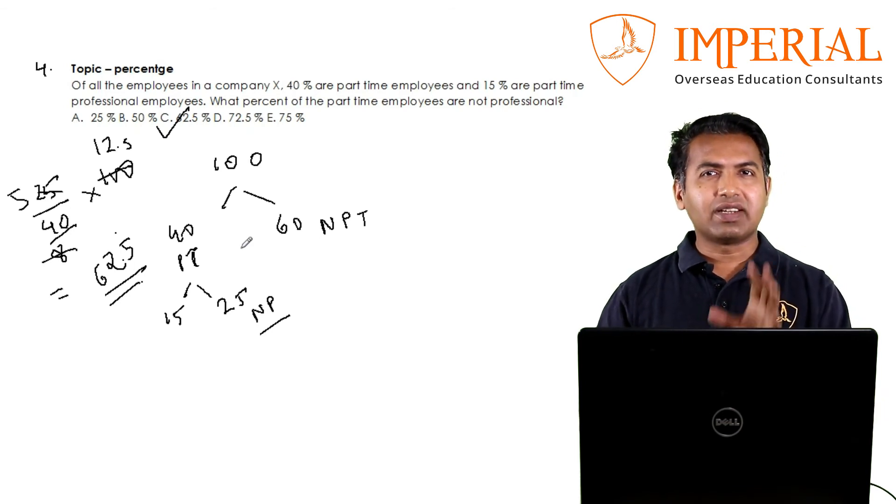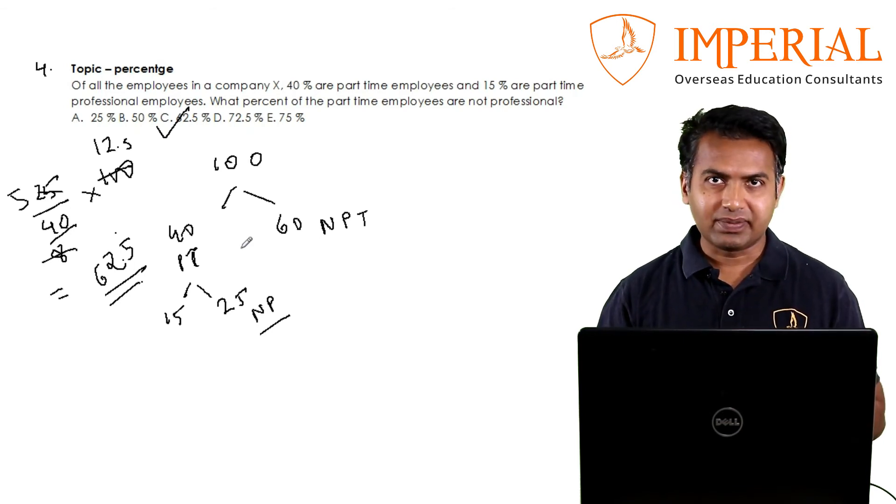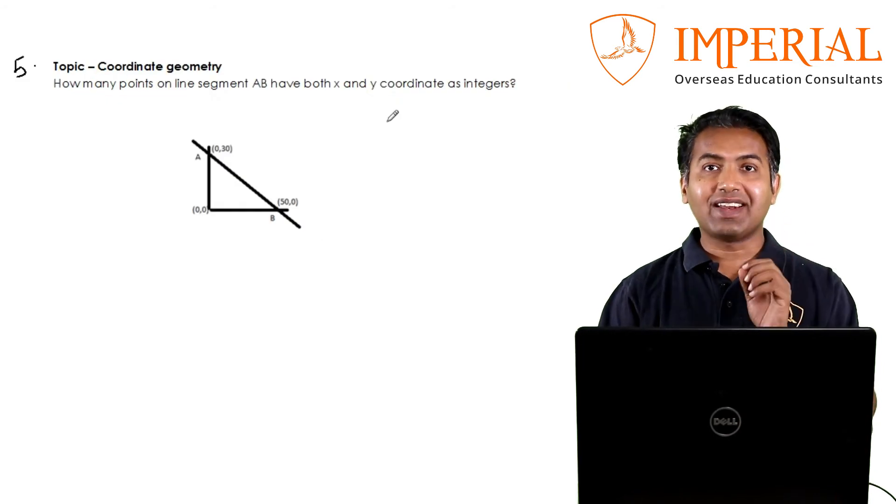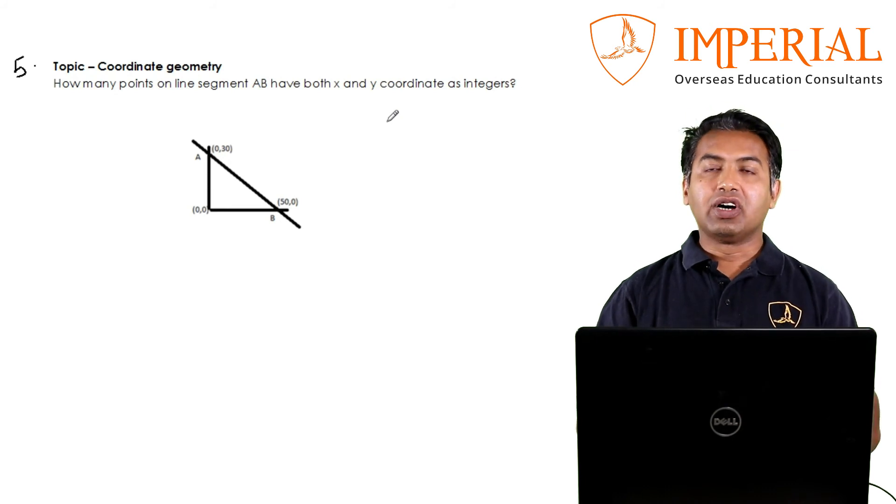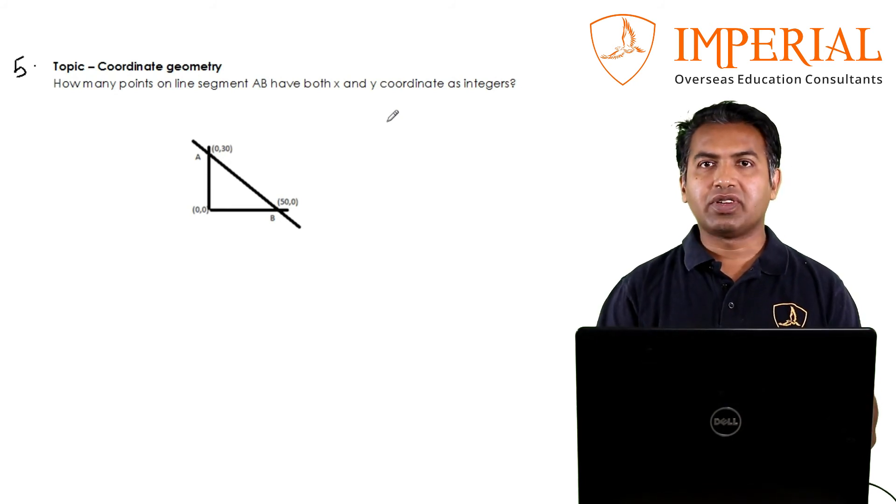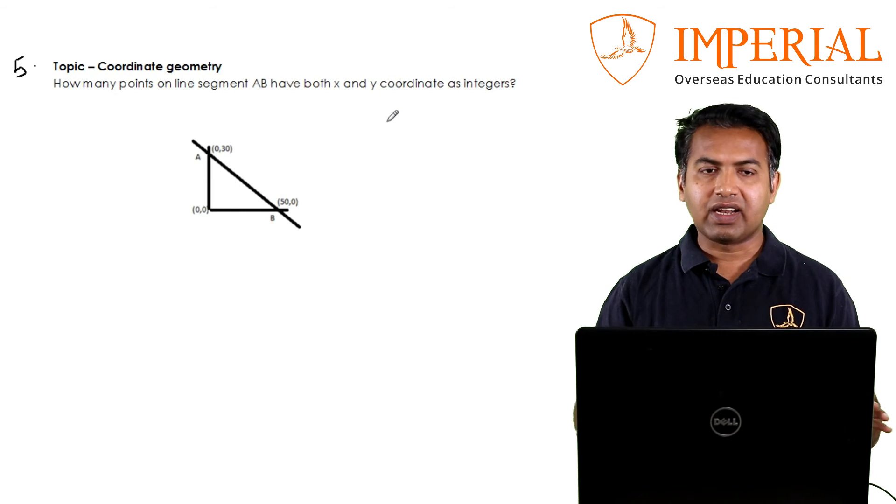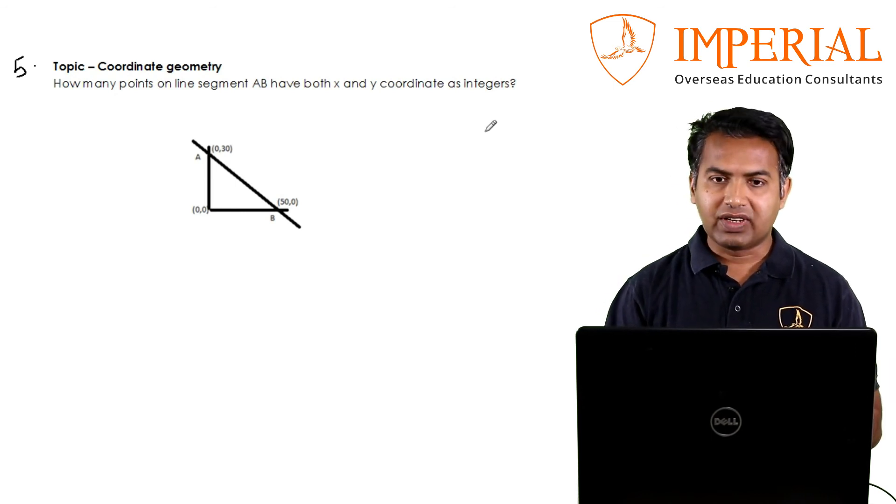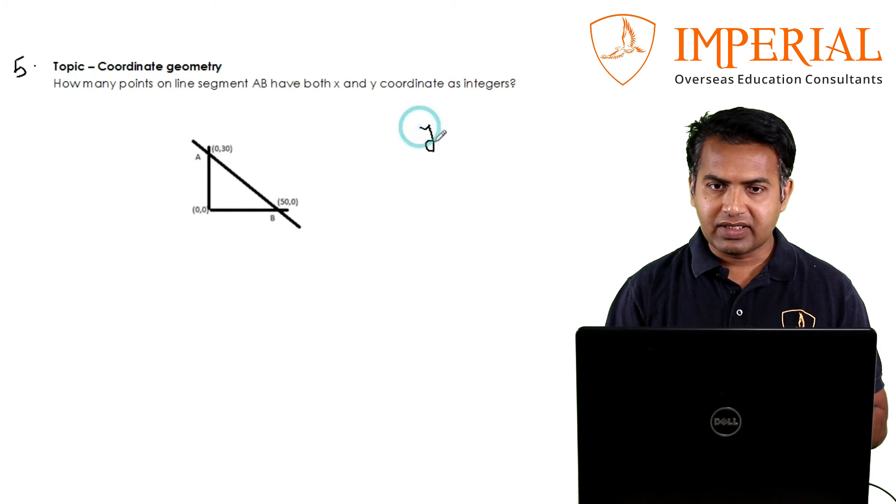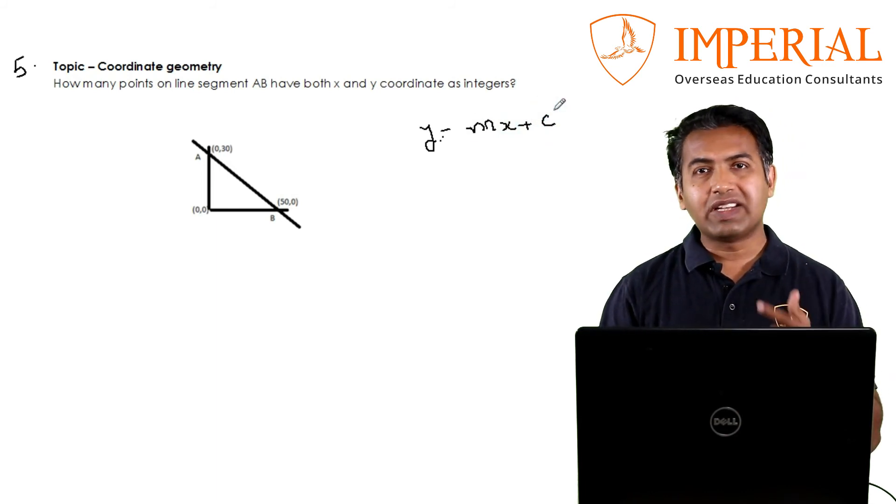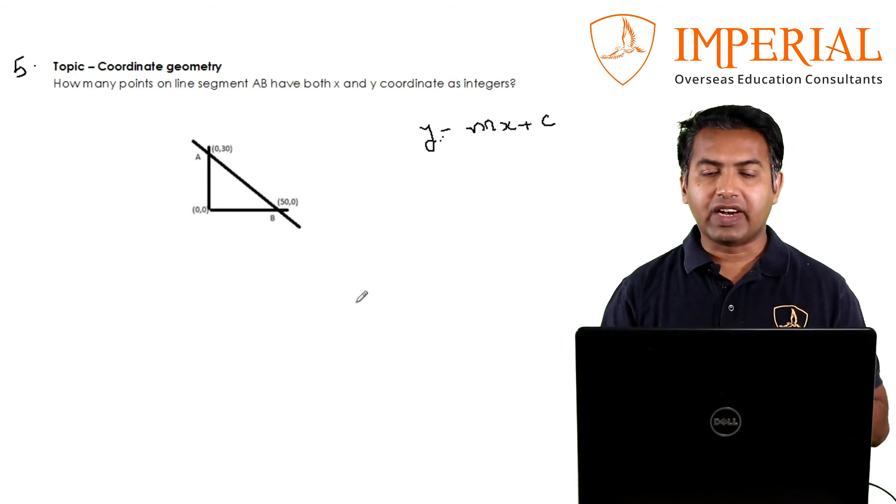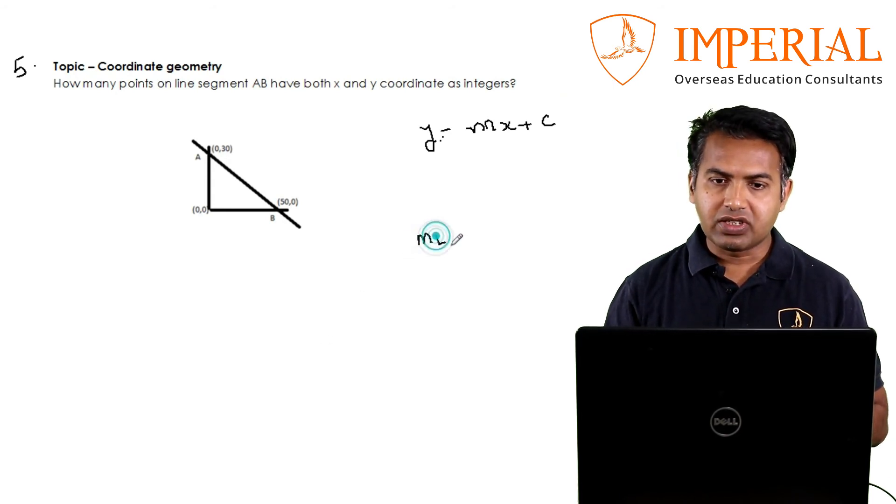Fifth one, and here's an example of a slightly higher level of difficulty. First of all you need a little concept here. We learn all this in the class. What is the equation of a line? The basic equation of a line is y equals mx plus c, where m is the slope and c is the y intercept. Slope we can find using the formula: change in the y upon change in the x.